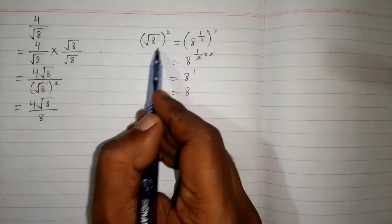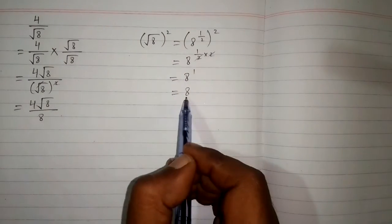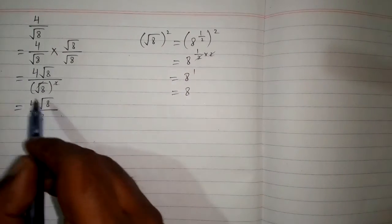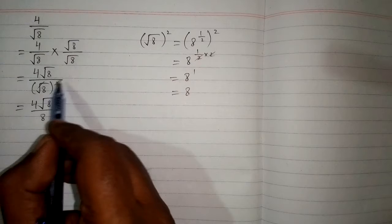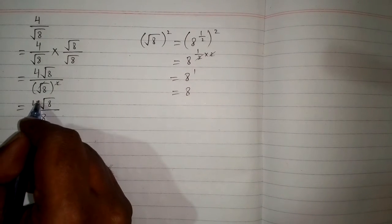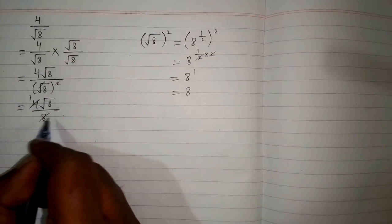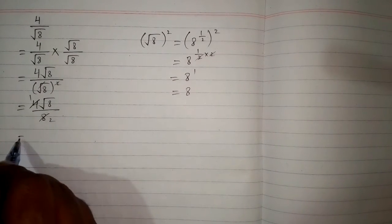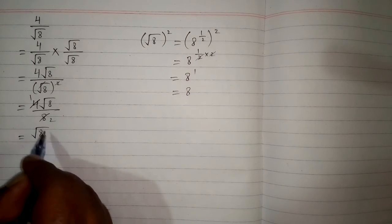So we can see that the square of square root of 8 is 8, and we can directly cancel the square root and the square. Now we can also cancel the 4 and the 8, giving us square root of 8 upon 2.